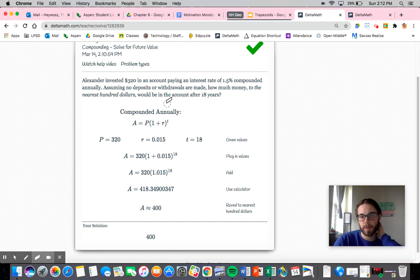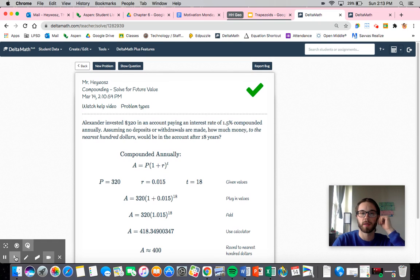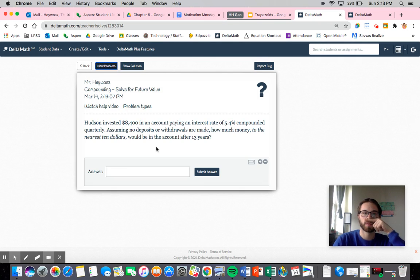It's compounded annually, so we have a rate of 0.015 and we don't have to do anything to it because it only goes in one time a year. We'll get $418, which rounds to $400. Let's do one more.